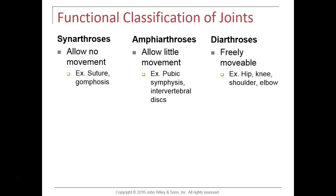Functionally, joints that allow no movement are called synarthroses. Joints that allow a little bit of movement are called amphiarthroses, and then there are diarthrotic joints, or diarthroses. Note the endings: the 'ES' ending is plural; if I use 'IS' that's singular — a synarthrosis. I can also say 'synarthrotic' but then I have to say 'joint' after it. So these are diarthrotic joints, or this is a diarthrosis.